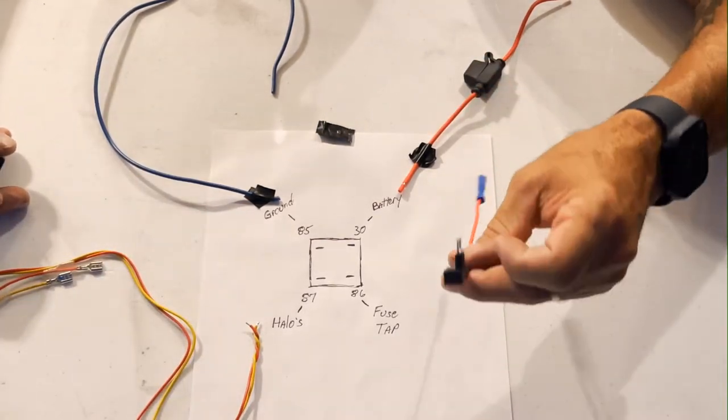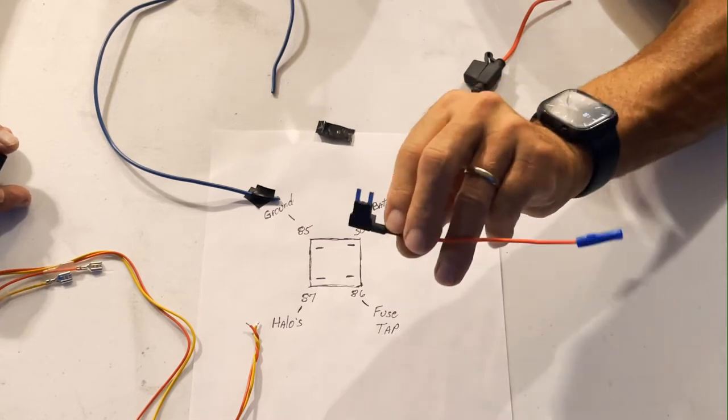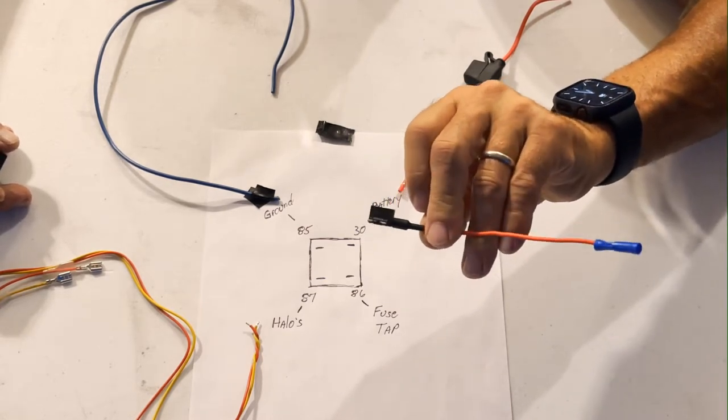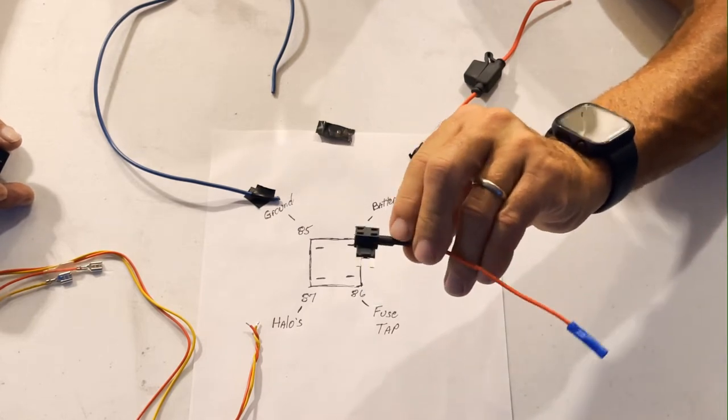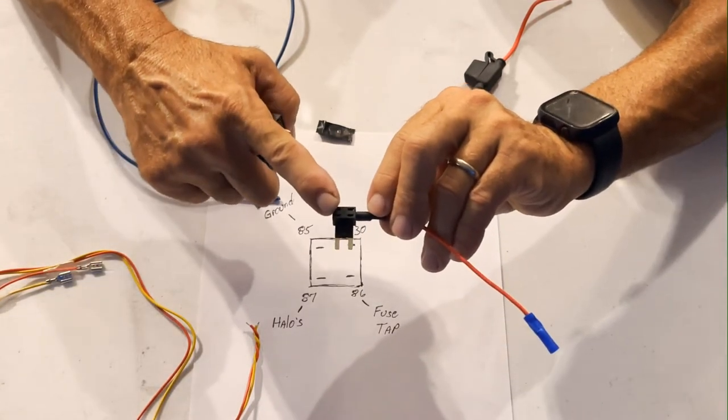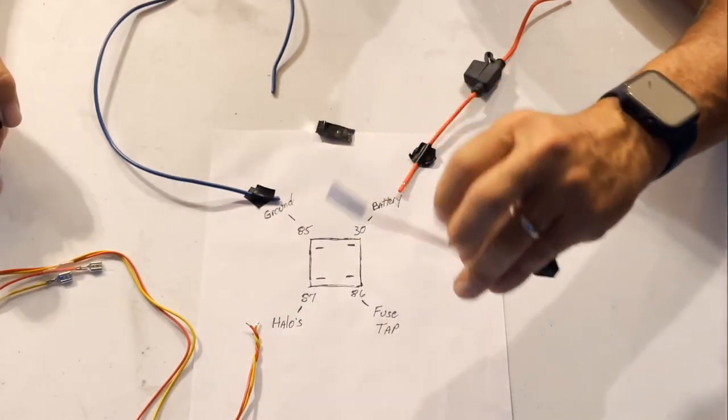You get a fuse tap like this. You take out a fuse that gets power when you turn your key on and off. Take that fuse out, put the fuse tap in, and then put that fuse back right here, and then you run that wire to pin 86.